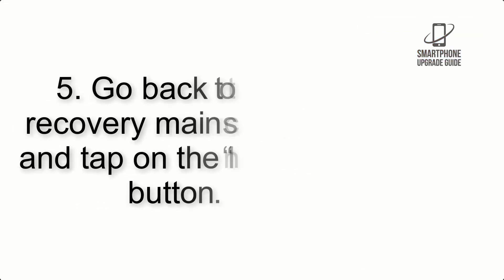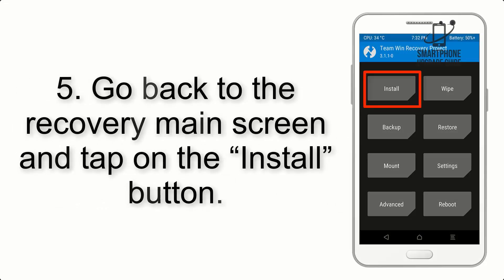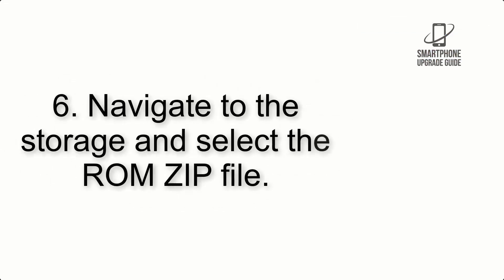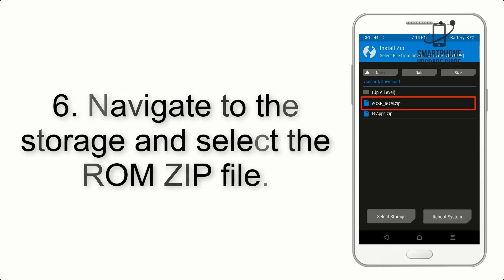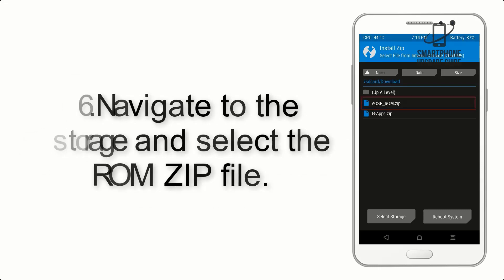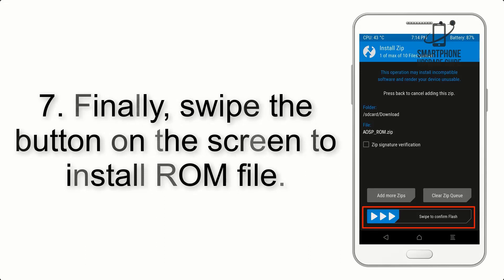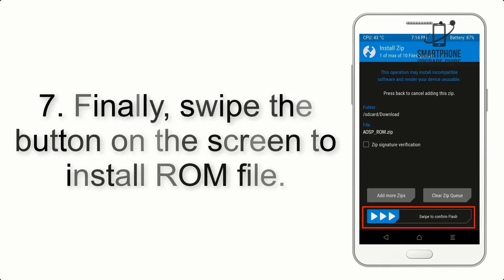Step 5: Go back to the recovery main screen and tap on the Install button. Step 6: Navigate to the storage and select the ROM zip file. Step 7: Finally, swipe the button on the screen to install the ROM file.